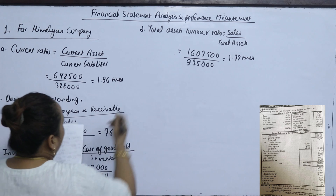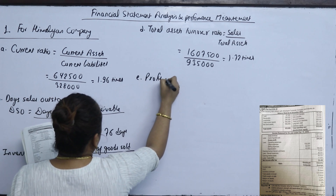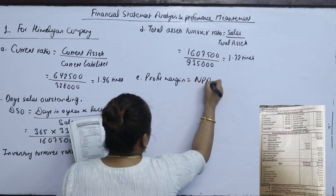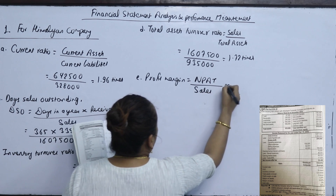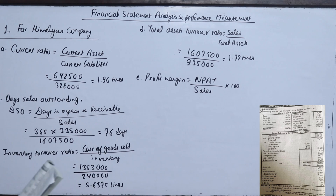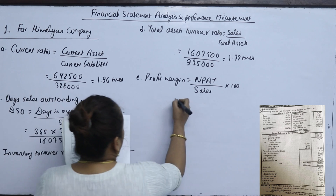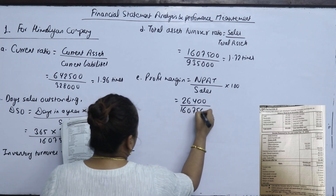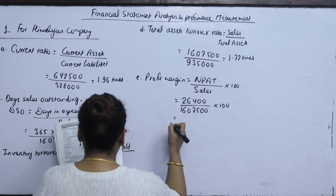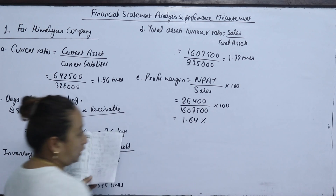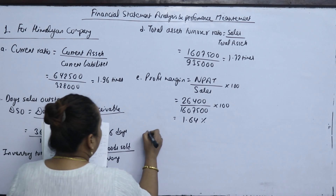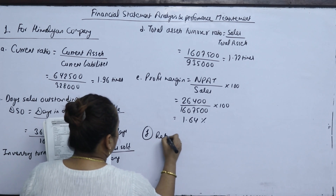The next ratio is profit margin on sales. The formula is net profit after tax divided by sales, multiplied by 100. Net income after tax is 26,004 and sales is 27,005. The profit margin on sales result is 1.64%.